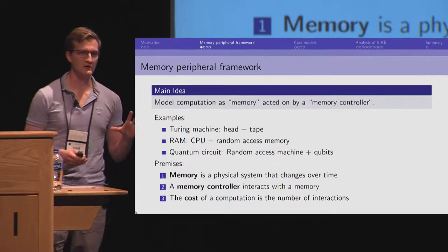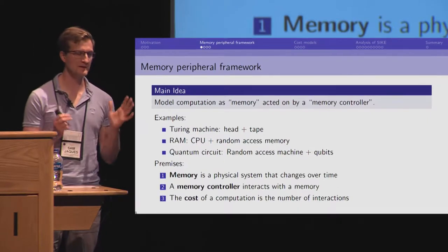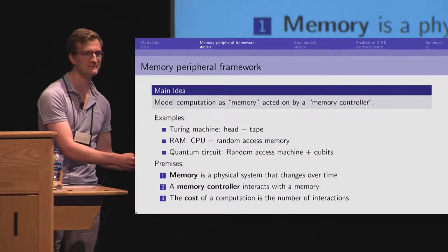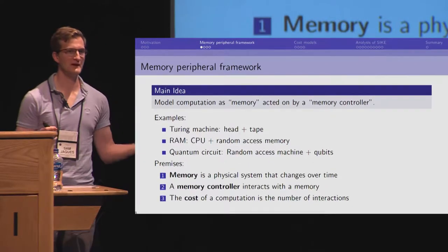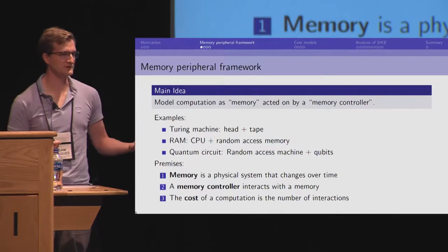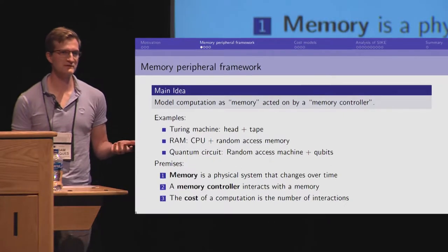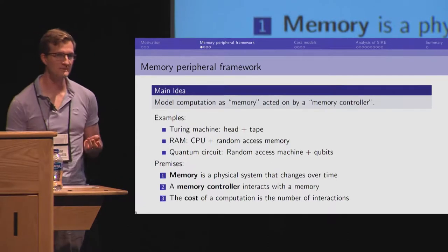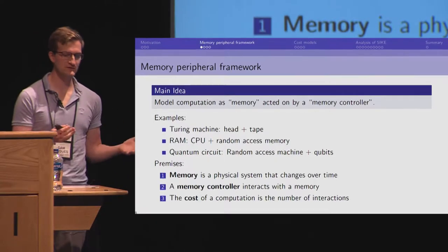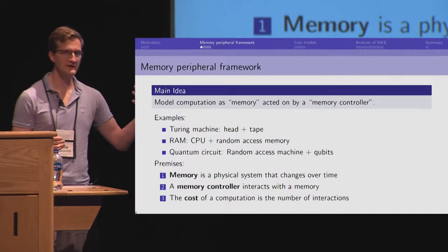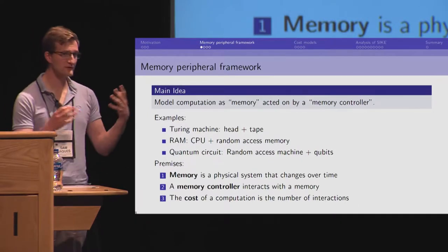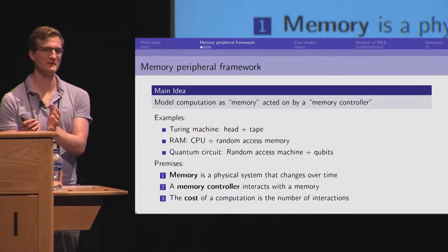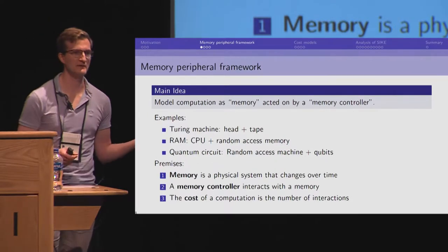So, this leads us to our memory peripheral framework. And the main idea is we want to model a computation as having some physical memory and some memory controller that acts on that memory. As some examples, a Turing machine fits in this if we view the tape as the memory and the head as the memory controller. A random access machine also fits in this. The CPU is the controller and the RAM is the memory. For quantum circuits, we can use a random access machine, classical, as the controller and use qubits as the memory.